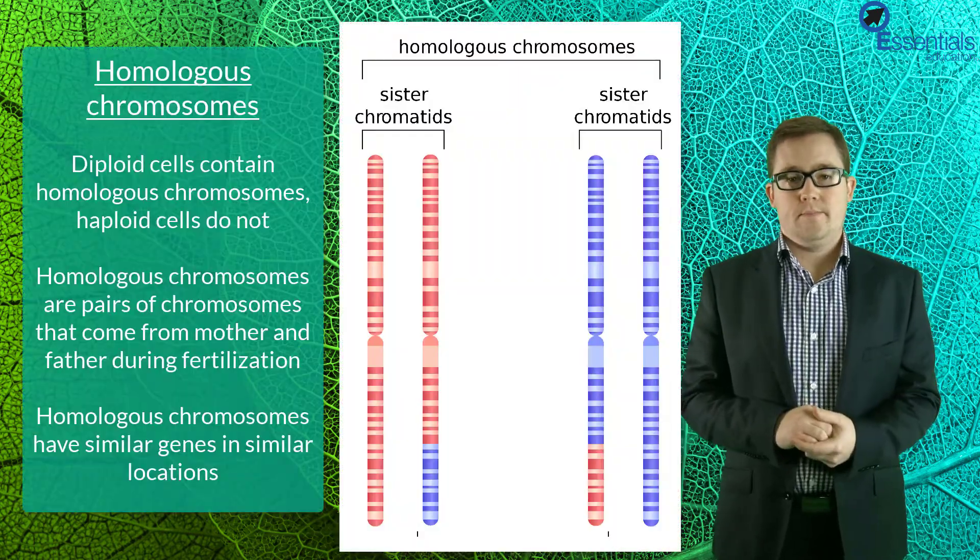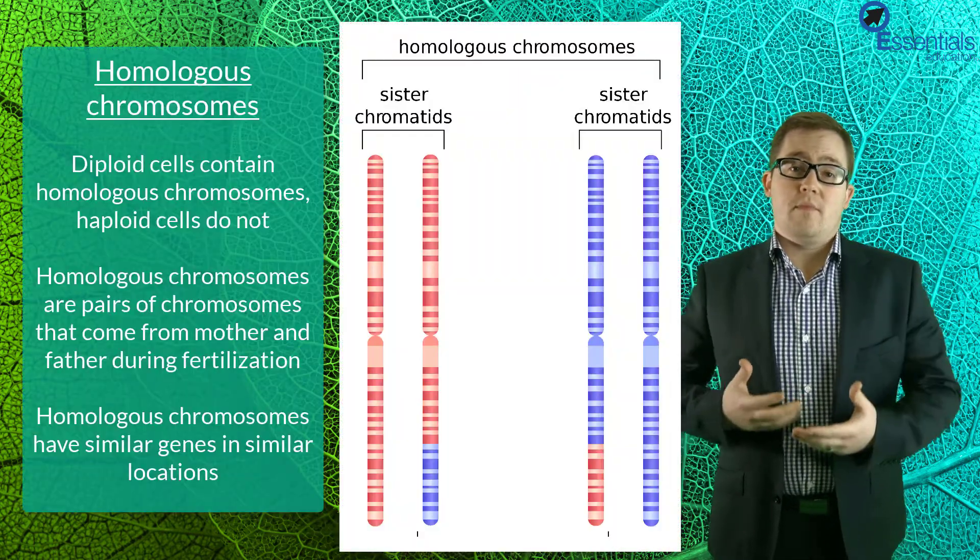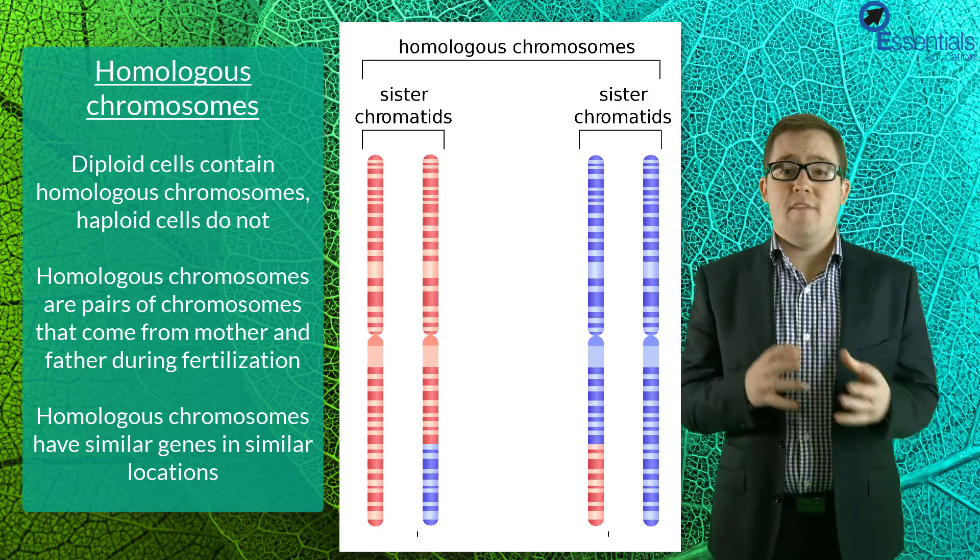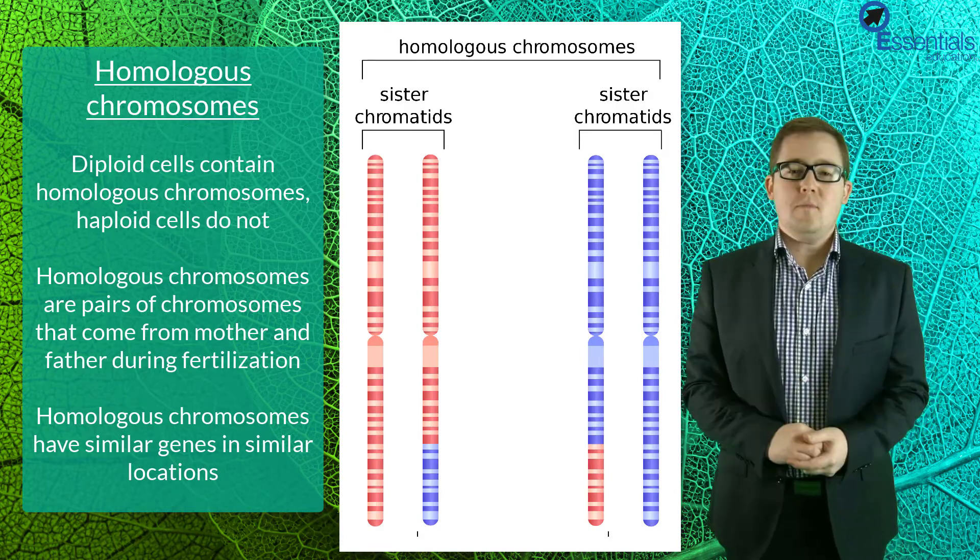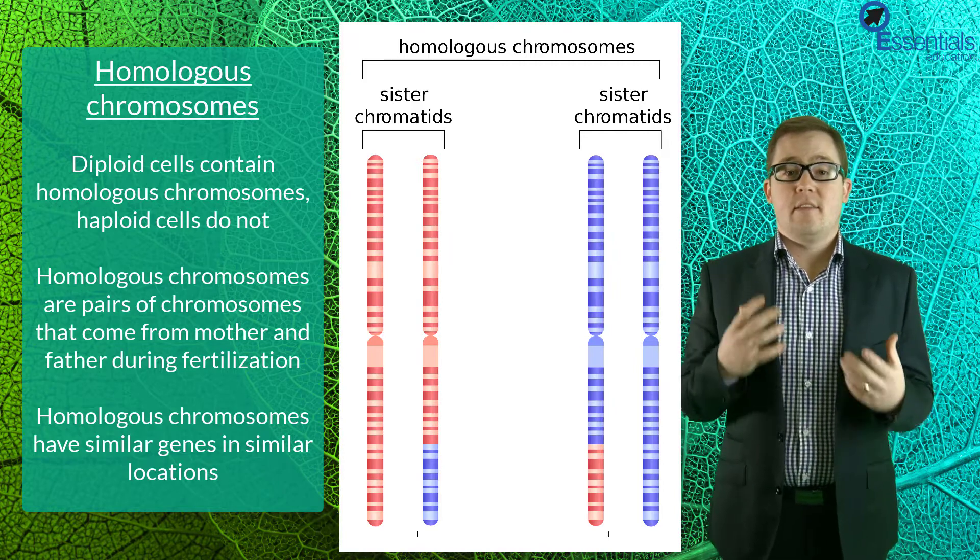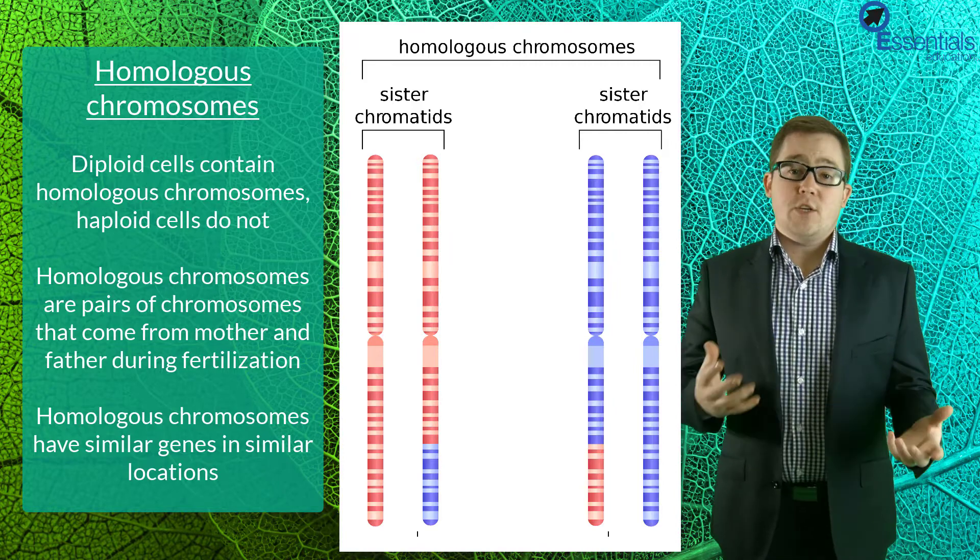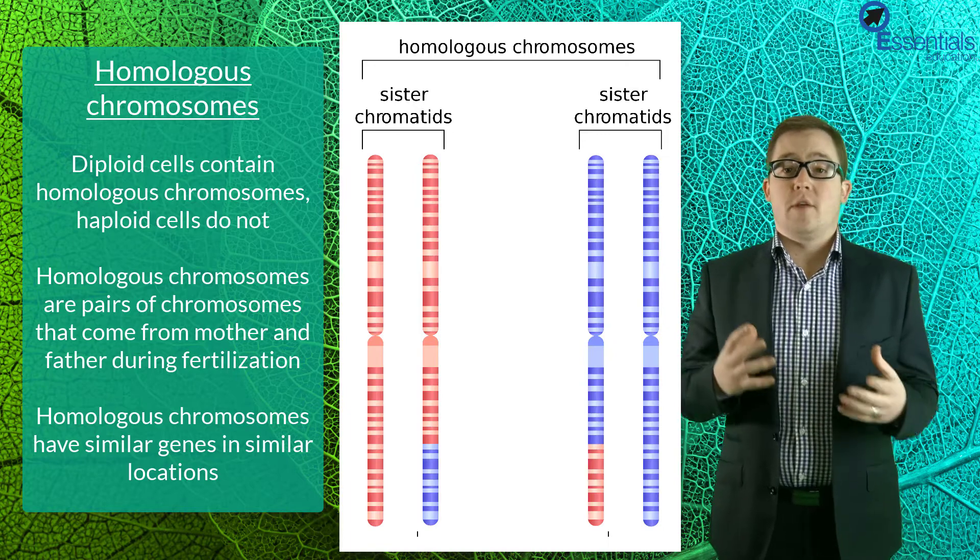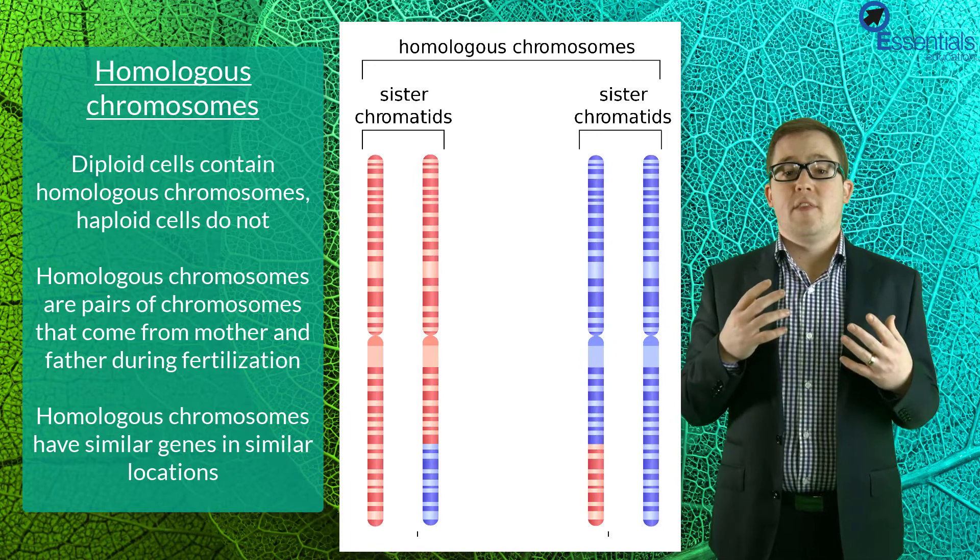A key fundamental difference between diploid and haploid cells, apart from haploid having half the amount of DNA, is that diploid cells contain what's called homologous chromosomes. Now homologous chromosomes are pairs of chromosomes that come from mother and father during fertilization. Each member of the homologous pair looks similar in length and contains similar genes.